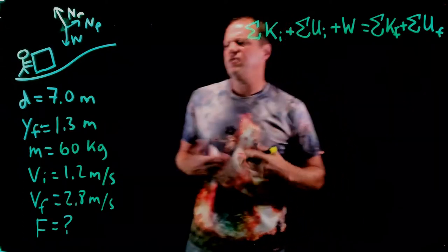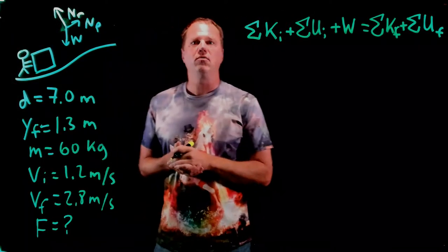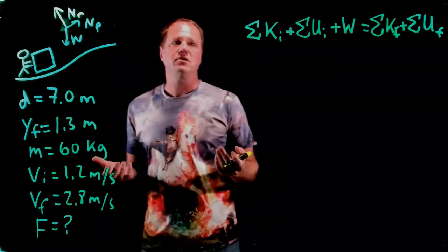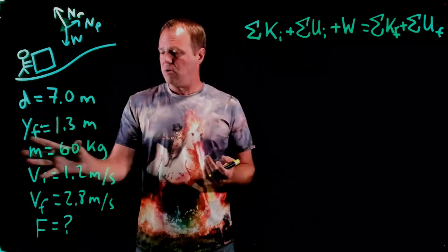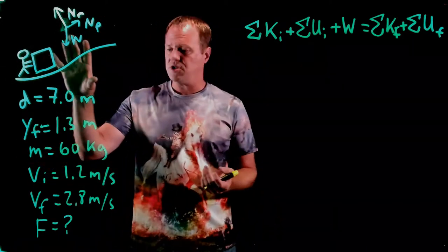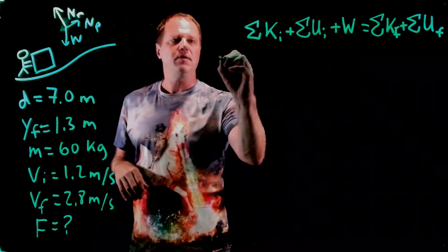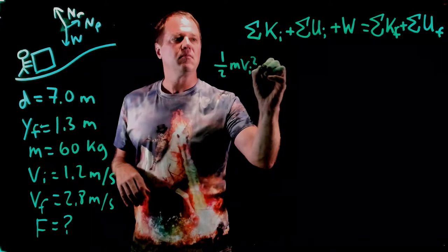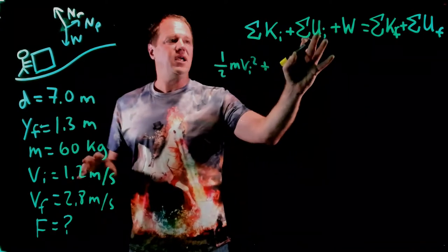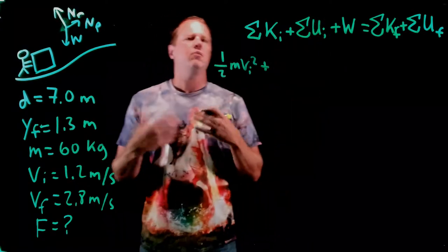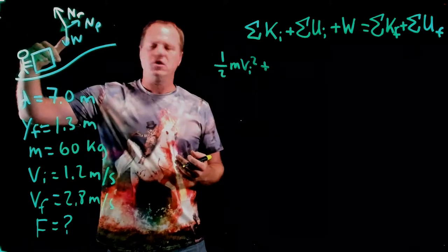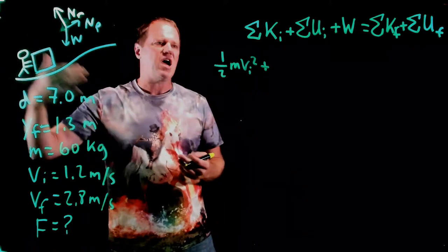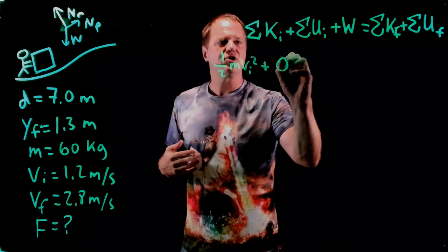Okay, so a fairly general formula that could apply to a lot of different physical situations. Now let's adapt it to this one. So I do have some initial kinetic energy, one half mv squared. I do not have any initial potential energy. I don't have a compressed spring. We're going to set y equal to zero at the bottom of this ramp, so there's no gravitational potential energy. So that term disappears.